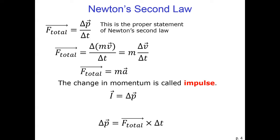As long as the mass is constant, the two forms of Newton's second law are equivalent. In fact, the momentum form of Newton's second law is universal. However, in special relativity, as the velocity of an object becomes a significant fraction of the speed of light, the mass starts to increase. So force equals ma is only true for classical mechanics, where velocities are not close to the speed of light.